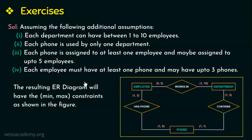Our last assumption is each employee must have at least one phone and may have up to three phones. Since all employees will have at least one phone, we have total participation. The maximum number of phones an employee can have is three, therefore (1, 3). Hope you have understood how to make additional assumptions and how to write the min-max constraints.